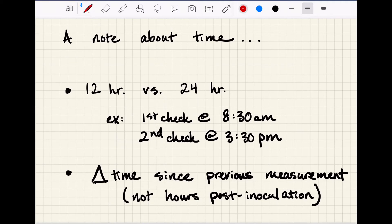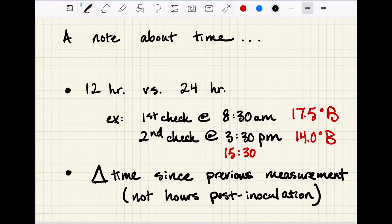For example, if I check bricks at 8:30 AM, let's say I get 17.5 degrees bricks, and then again at 3:30 PM and I get 14 degrees bricks. If I express that time as 15:30 instead, then it's easy to see that there were 7 hours between checks and my rate is 3.5 degrees bricks over 7 hours or 0.5 degrees bricks per hour.